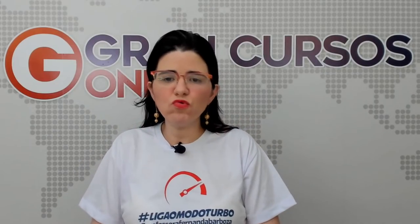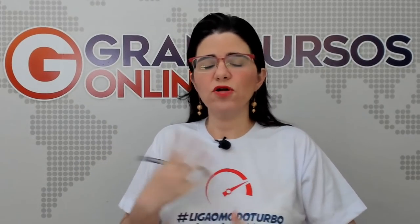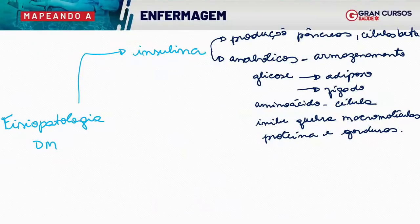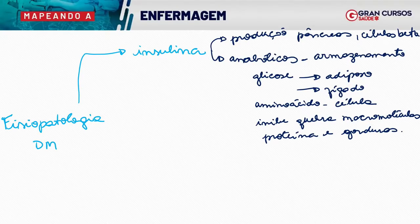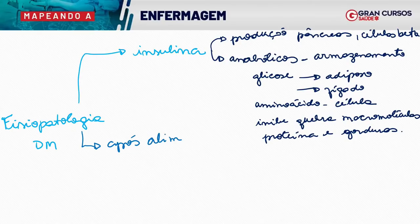Quando quebro a gordura, libero cetonas. Aí vem o hálito cetônico, a cetonúria. Porque estou quebrando proteína e lipídio, que não era para estar sendo quebrado, pois não tem insulina para controlar. A insulina é liberada após a alimentação para ajudar essa glicose a tomar o seu destino.